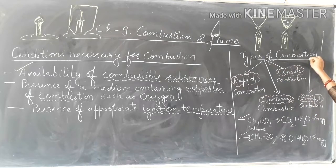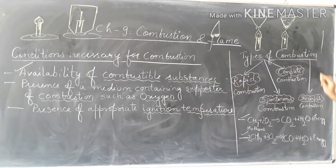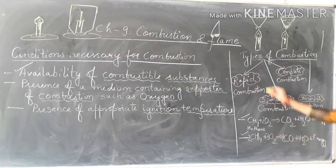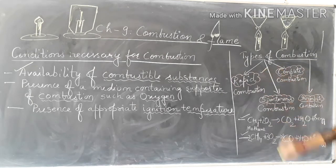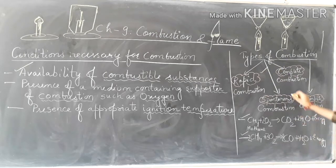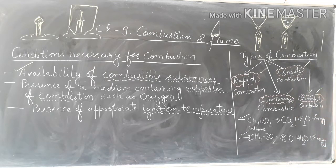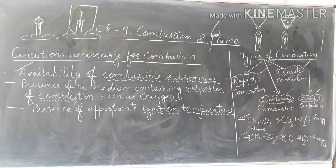What are the different types of combustion? There are basically four types of combustion: rapid combustion, spontaneous combustion, complete combustion, and incomplete combustion.